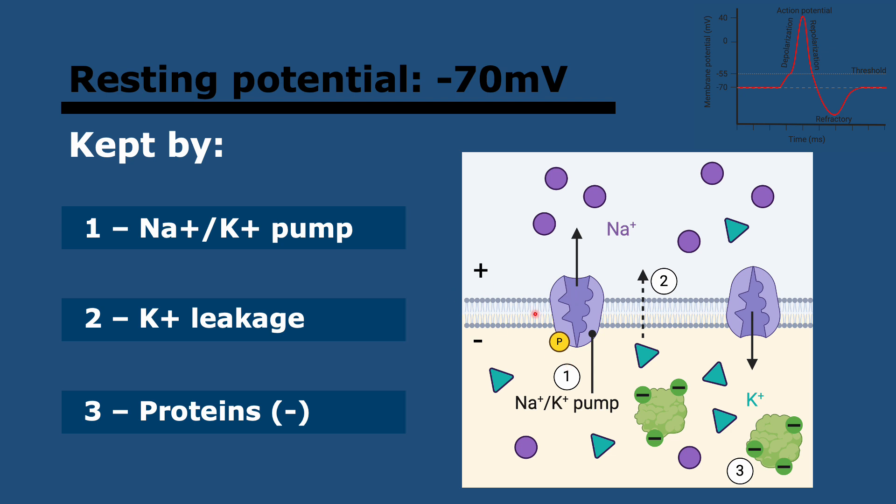On top of that, the membrane is just naturally more permeable to potassium. So some of the potassium that the pump brings in is going to leak out. And then thirdly, there are negatively charged proteins inside the neuron, which again contribute to this charge imbalance. Basically, we're going to have less positive charges inside than outside.